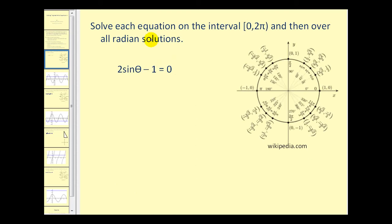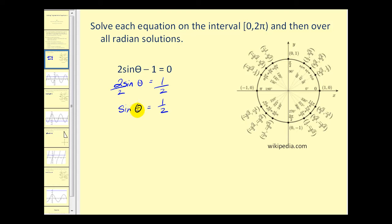We want to solve each equation first on the interval from zero to two pi and then over all radian measure. What we are going to do first is solve this equation for sine theta. We will add one to both sides and then divide by two. Sine theta must equal one half. First we want to find all the angles that have a sine function value of one half on the interval from zero to two pi.